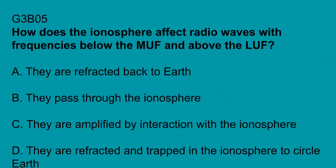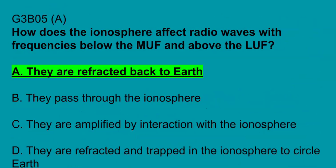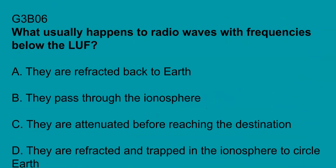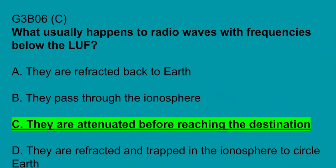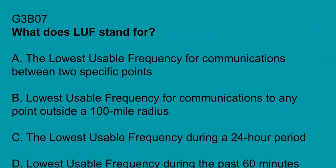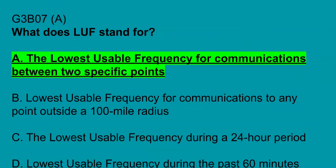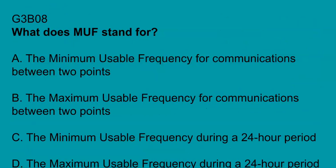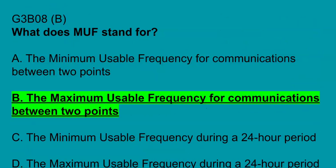G3B05: how does the ionosphere affect radio waves with frequencies below the MUF and above the LUF? They are refracted back to Earth. G3B06: what usually happens to radio waves with frequencies below the lowest usable frequency? They are attenuated before reaching the destination. G3B07: what does LUF stand for? The lowest usable frequency for communications between two specific points. G3B08: what does MUF stand for? The maximum usable frequency for communications between two points.